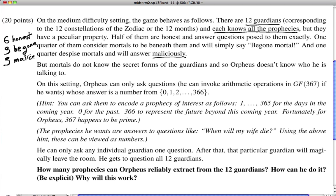So we have 12 total, six are honest, three just don't answer, and three are malicious. So the question is, does Orpheus know who he's talking to? And the answer is no, Orpheus doesn't know who he's talking to. So Orpheus gets, somehow, 12 questions that he asks answered. And six of them will be honest, three will be be gone, and three will be wrong. And he won't know which ones are honest and which ones are malicious. But he'll know which ones are be gone.